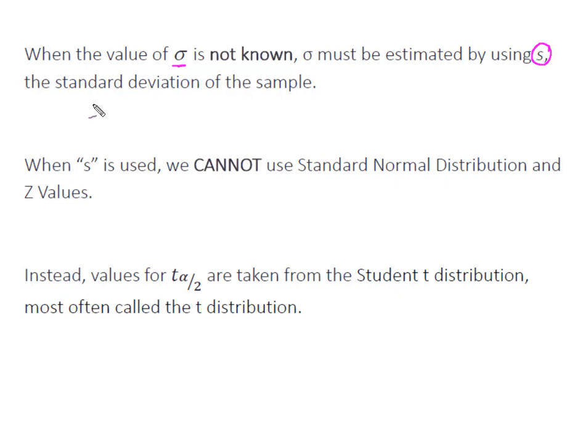When we knew the population standard deviation, we were able to find these standard values of z alpha divided by 2 that were associated with the various levels of confidence. However, when s is used to estimate the population standard deviation, we cannot use standard normal distribution and z values.